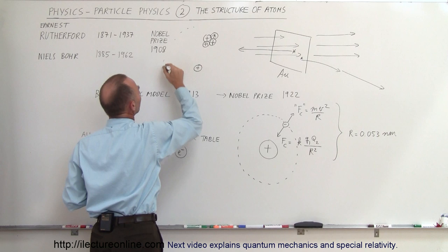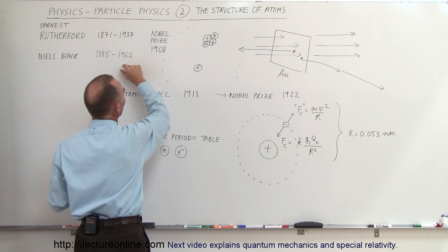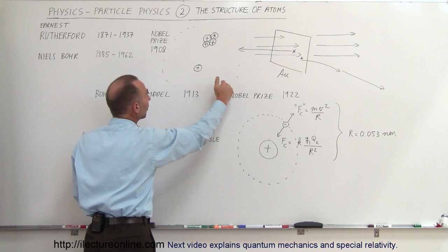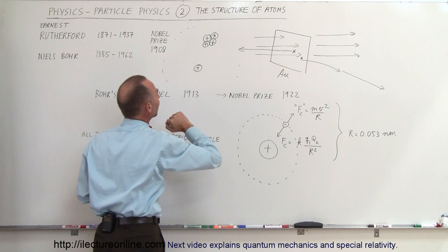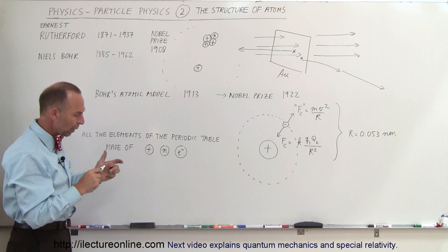And so only if an alpha particle came close to what we would call the nucleus of an atom, it would be repelled by the positive charge of the nucleus and therefore go one direction or go the other direction like this. And in the case of a head-on collision, it would simply come straight back. That was the concept.